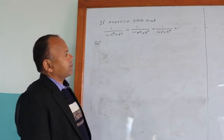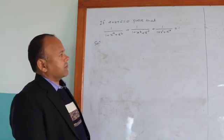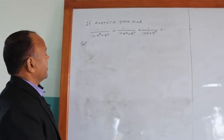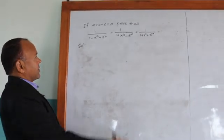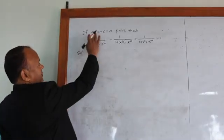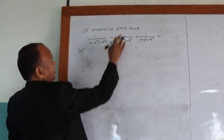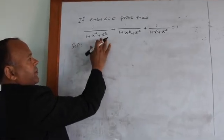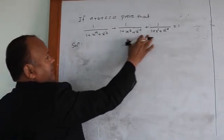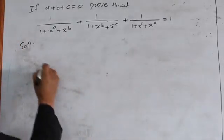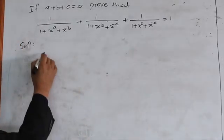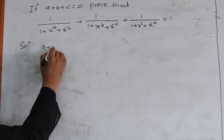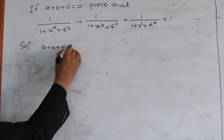Let us see the solution — the proof of this problem. Here we have given a plus b plus c is equal to 0, and we have to prove that the value of this expression is equal to 1. For this, a plus b plus c is equal to 0.